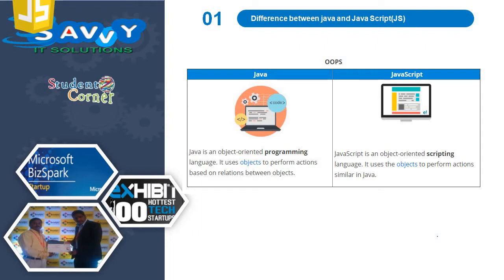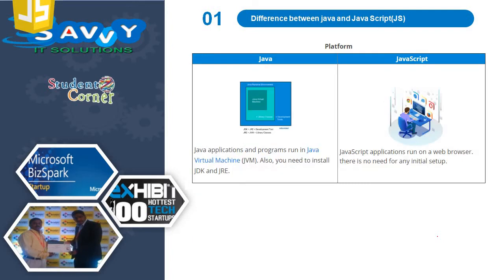Java is an object-oriented programming language. It uses objects to perform actions based on relations between objects. JavaScript is an object-oriented scripting language. It also uses objects to perform actions similar to Java. Java applications and programs run in a Java Virtual Machine, and you need to install JDK or JRE. JavaScript applications run on a web browser and there is no need for any initial setup.